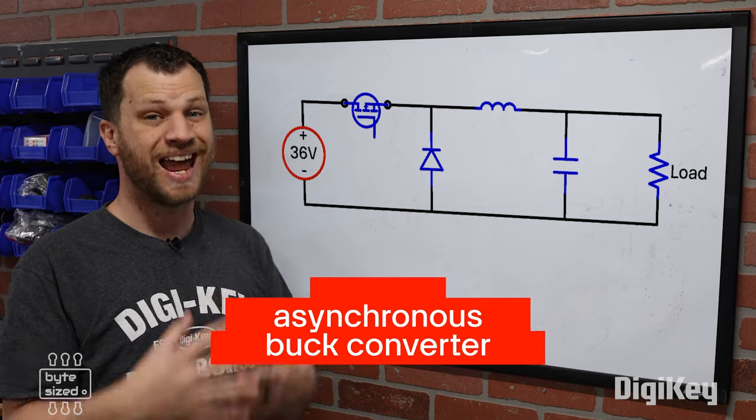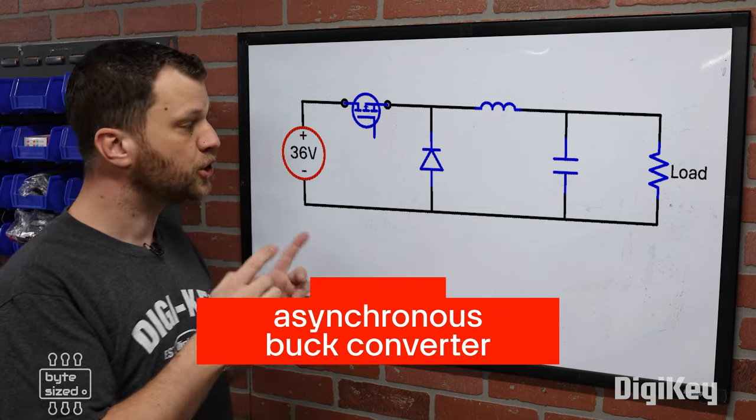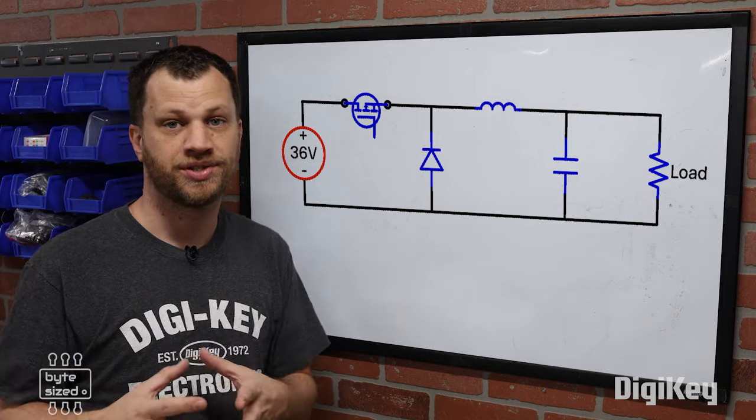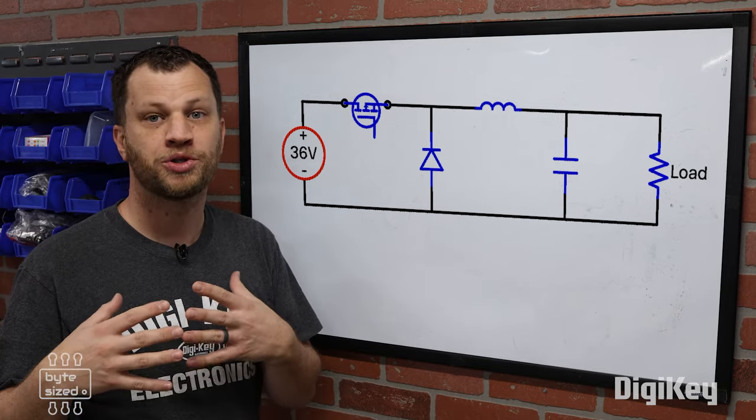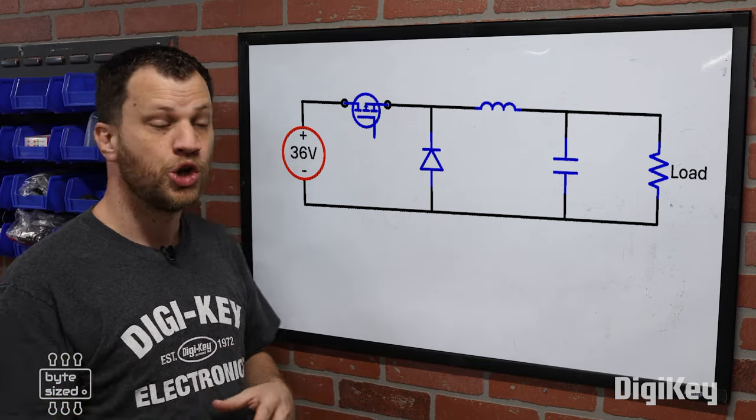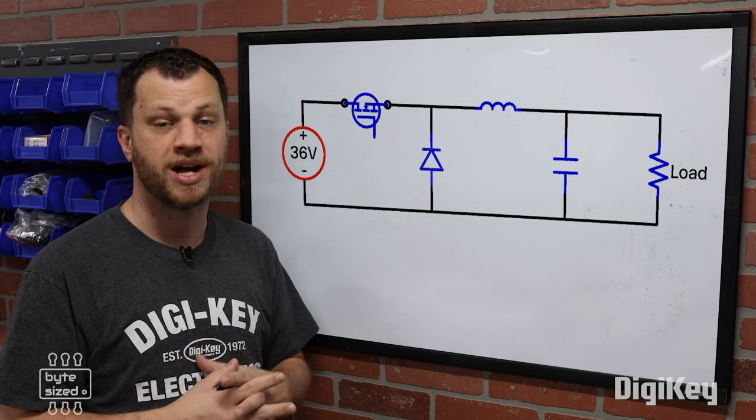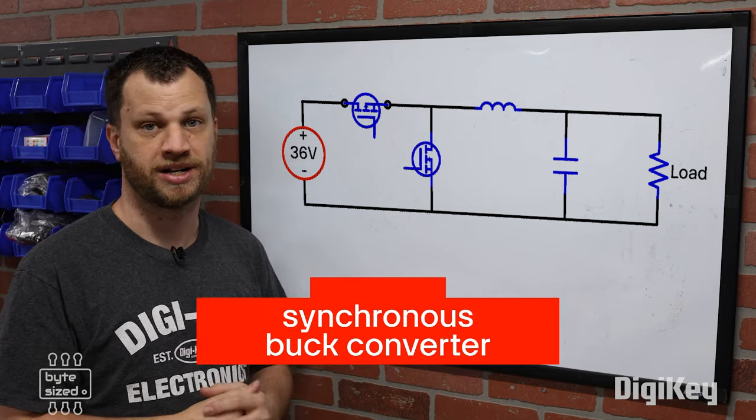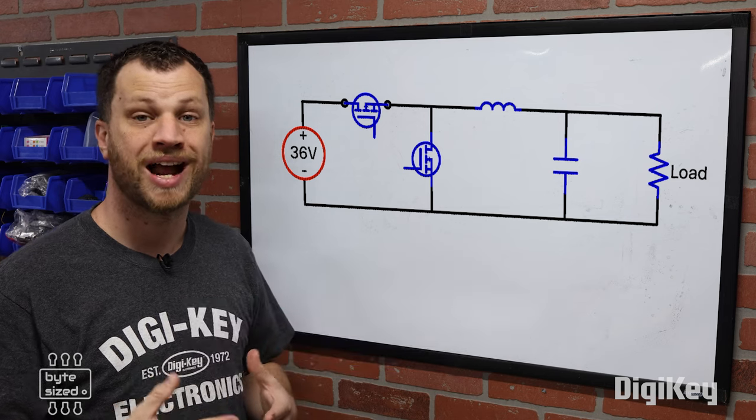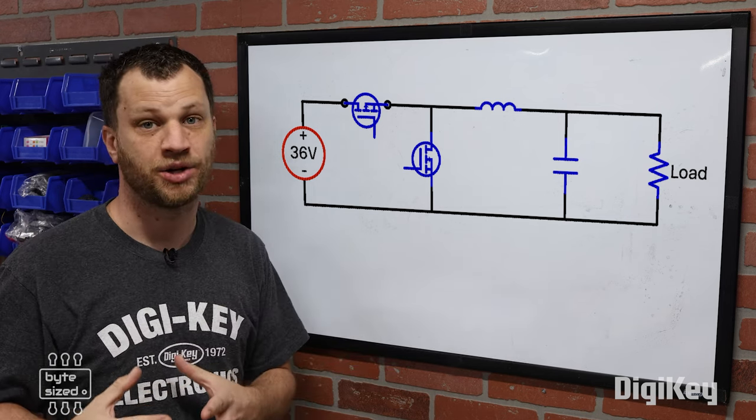This buck converter design is called an asynchronous buck converter because it uses a diode to conduct electricity when the MOSFET is off. If you want to improve efficiency even further, you can replace the diode with another MOSFET, making it a synchronous buck converter. The synchronous buck converter has many advantages over the asynchronous topology.